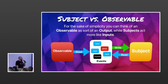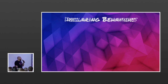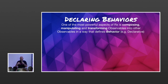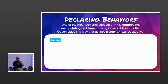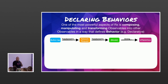So we can observe values and we know how subjects work, but why is this so powerful? One of the most powerful aspects of Rx is that it lets you compose, manipulate, and transform observables into other observables to define behavior. For example, I can take a stream of button taps, transform it into a network request, then transform that into an array of data models from the request, and eventually bind that into a table view. That entire thing is a singular chain.